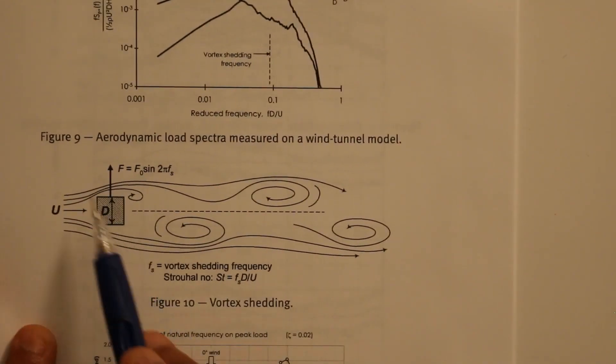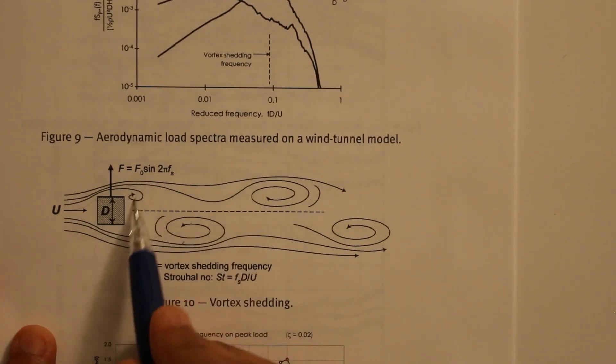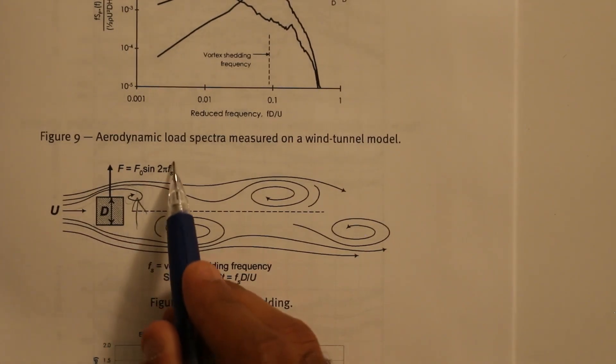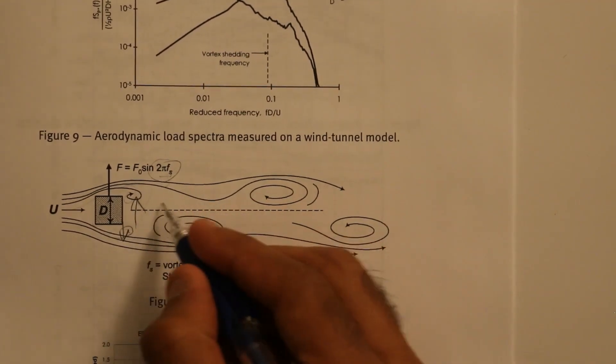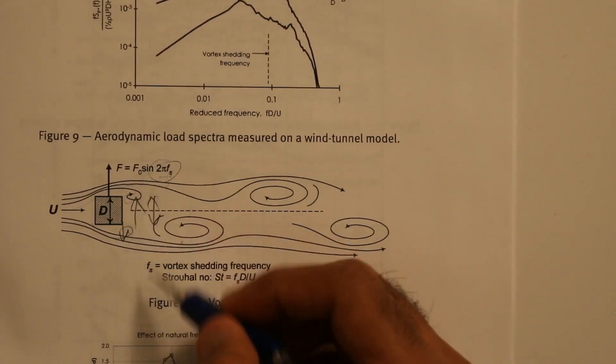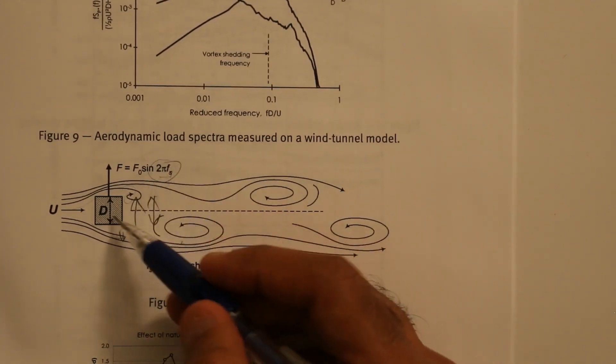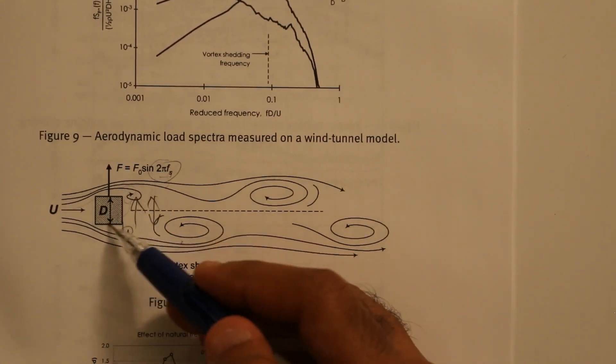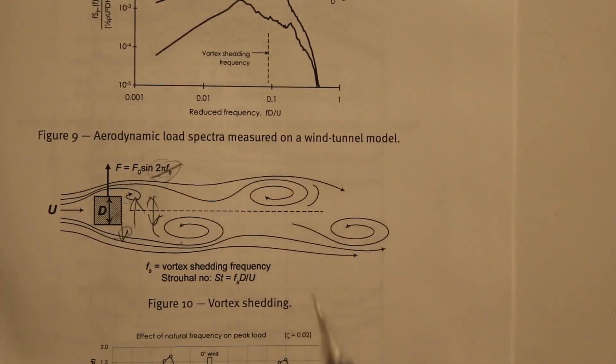So in wind, as we saw before, vortices are created on both sides. So the building moves that way. Then after the period 2π/fs, there will be a vortex over here. So structure will move this way. So it just goes back and forth at a constant frequency creates this dynamic loads. And just by chance, if the frequency of the structure is matching this frequency, structure will collapse if not enough damping is provided.